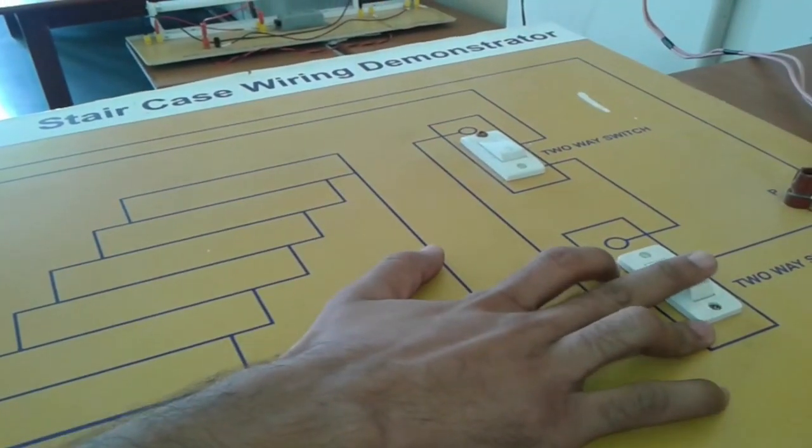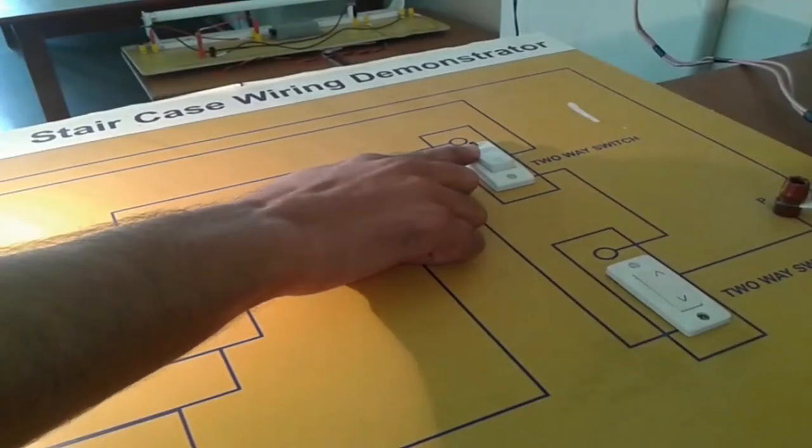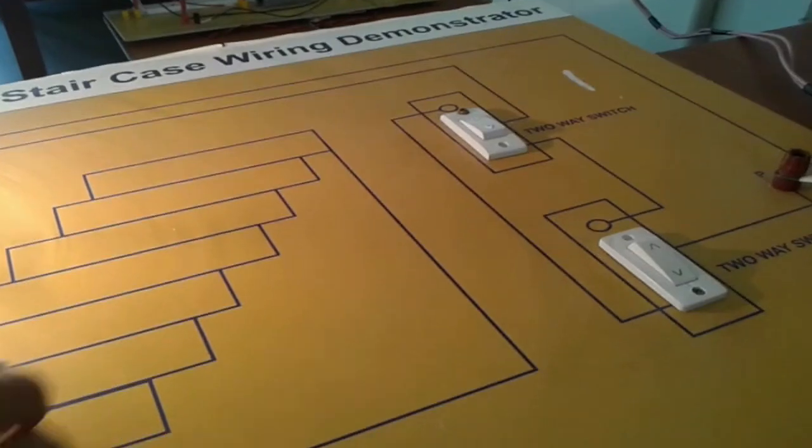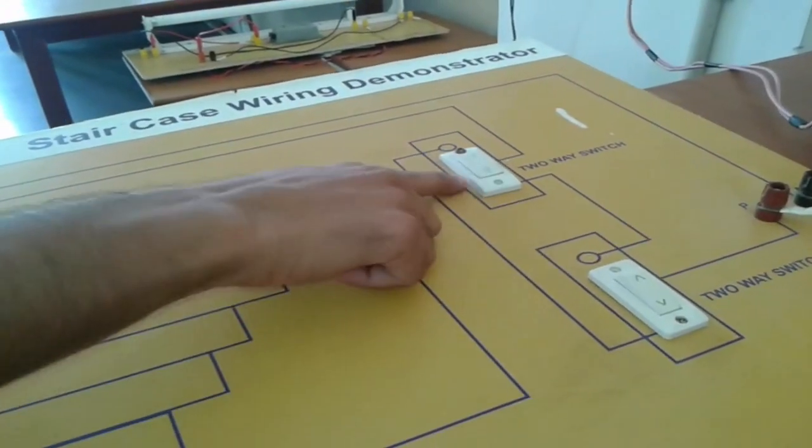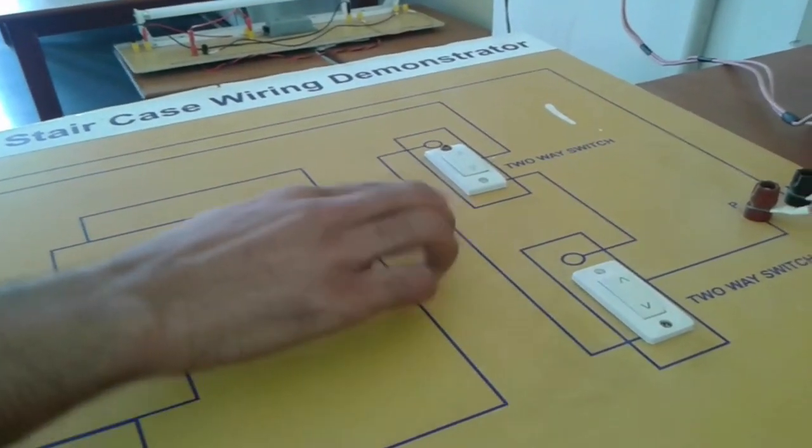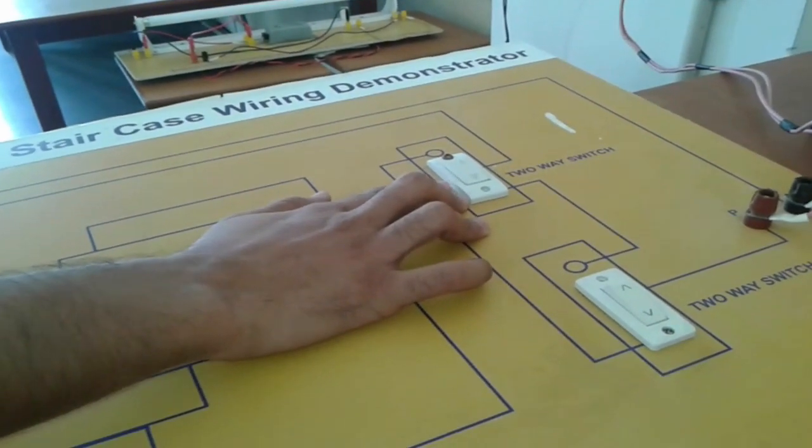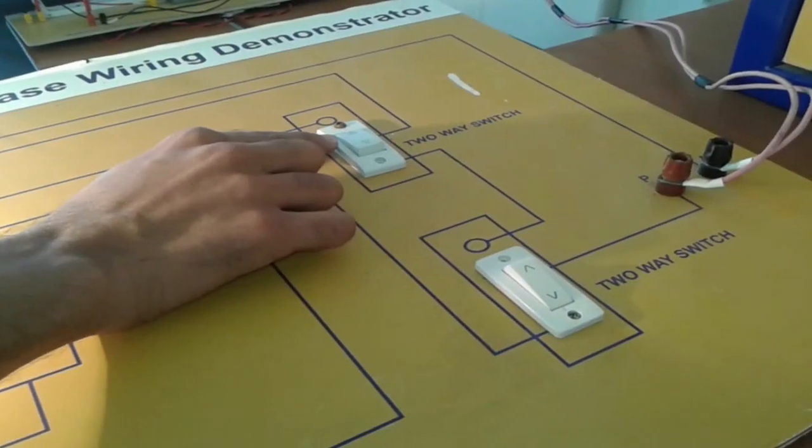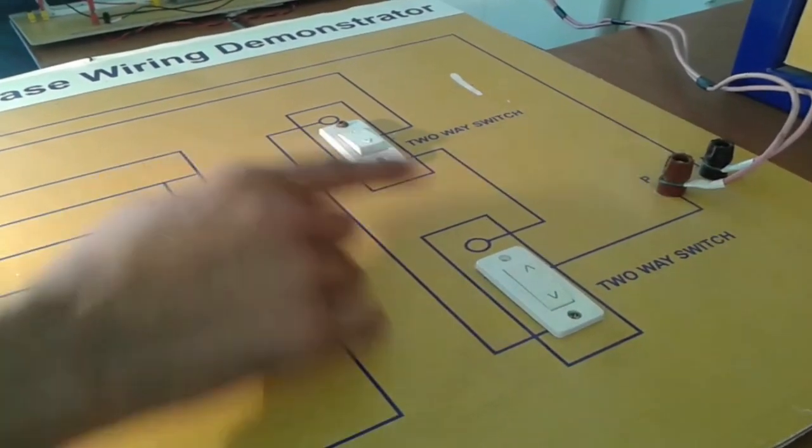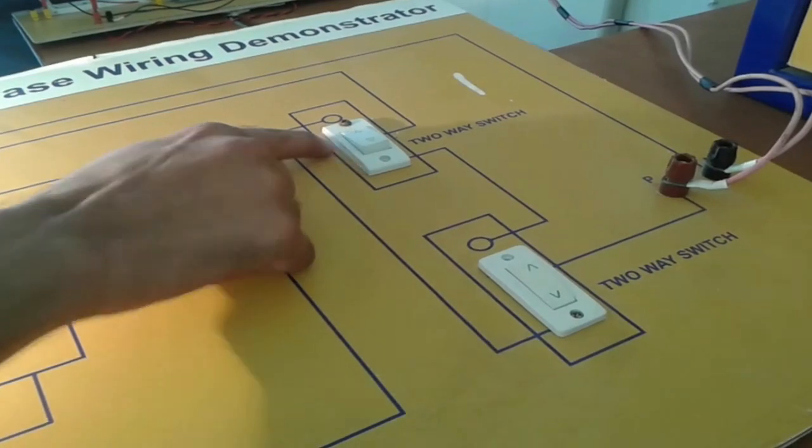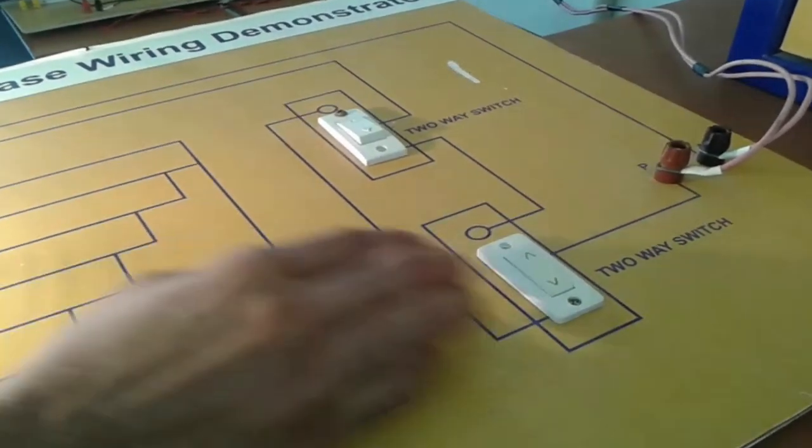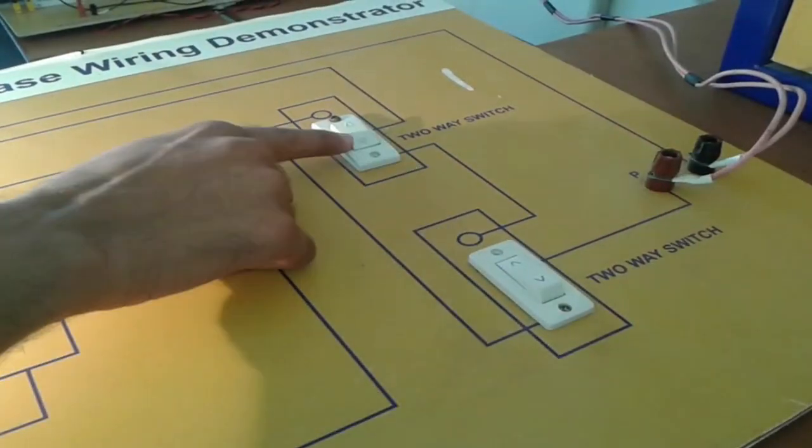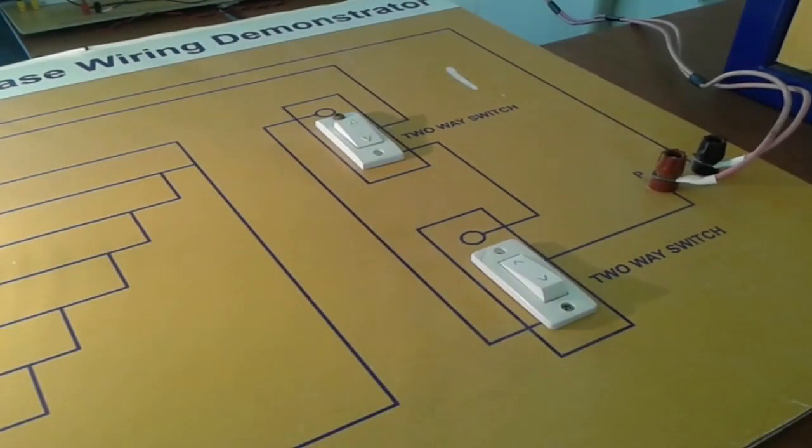Then you can watch here. Both are off. If I will turn on this switch, then this is 0 and this is 1. Then now you can watch, bulb will glow. If now both are on, now both switches are on, now it will not work. If this is off, means this is 0 and this is 1, then this is on. Now last condition, both are in same state. Now this is 1, this is 0. Now you can watch, bulb will glow.